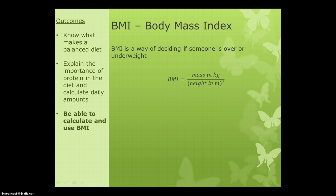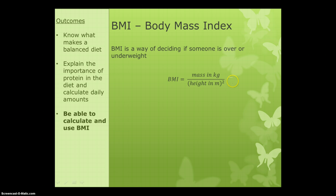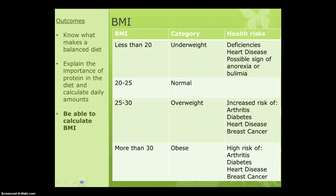The next thing we can calculate is BMI — body mass index. It's an estimate of whether someone is over or underweight, because there are health issues associated with both conditions. BMI is calculated as mass in kilograms divided by height in metres squared. If you need to calculate this in the exam, the equation will be given to you. The key thing to watch out for is to remember to square the height.